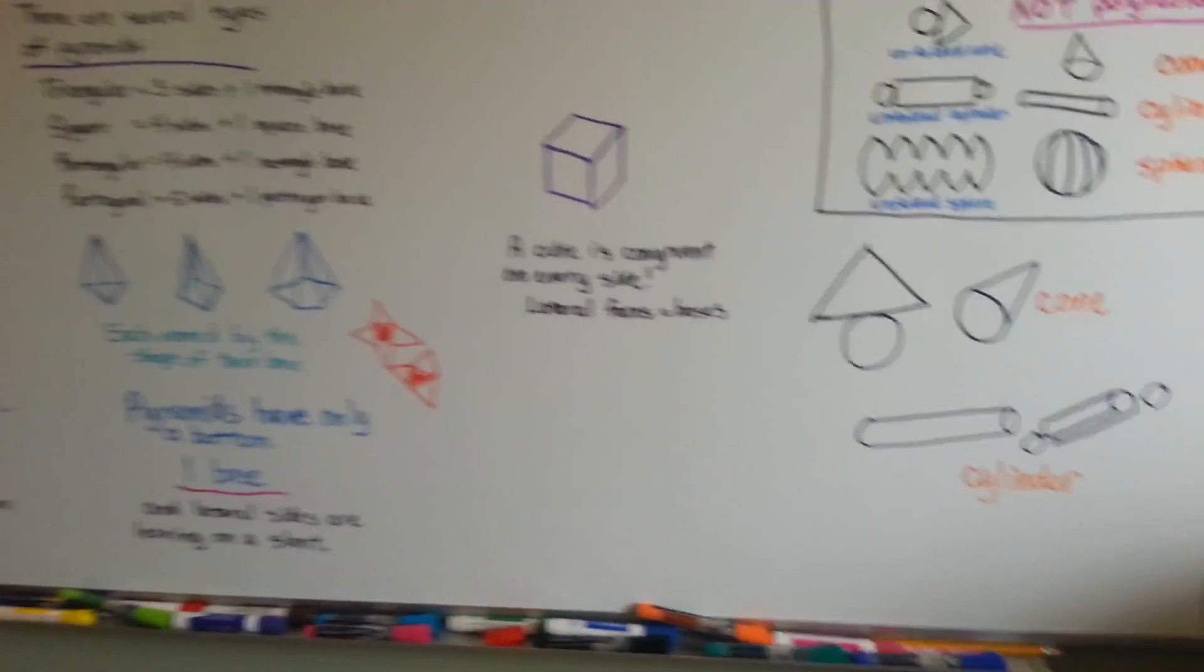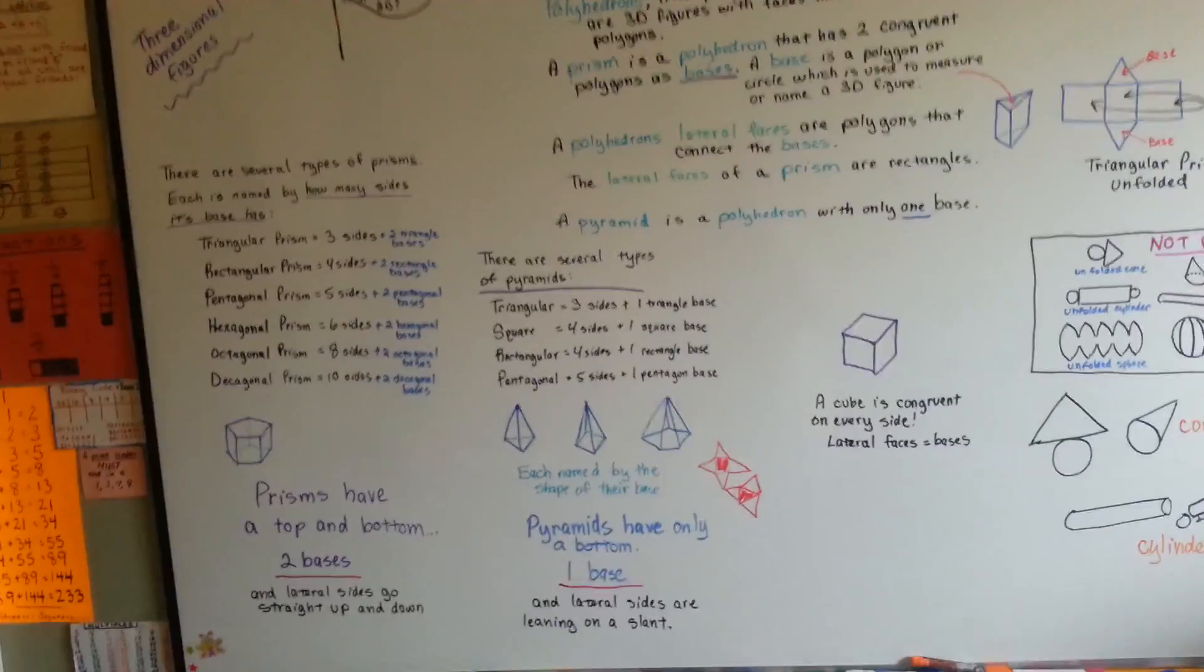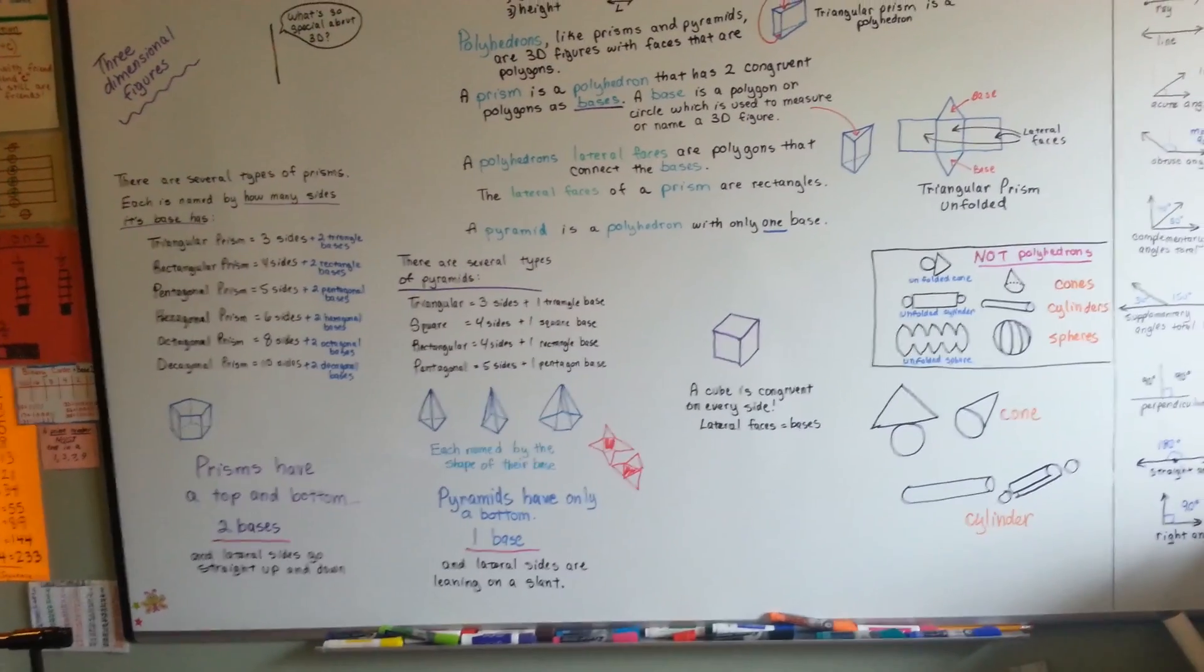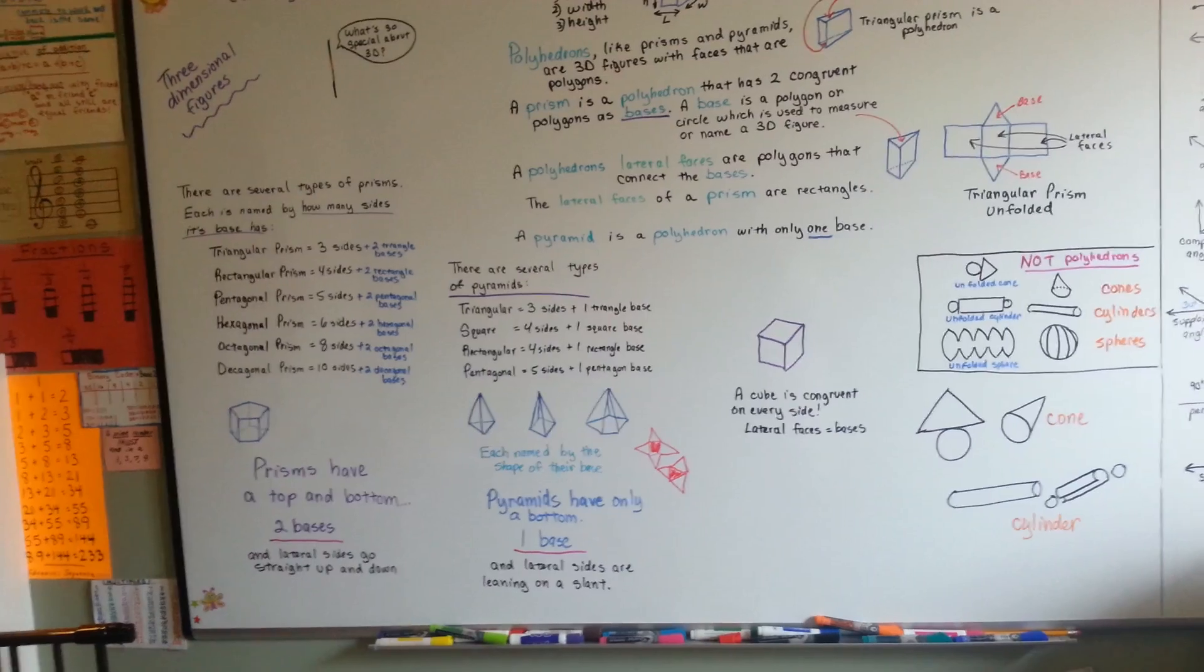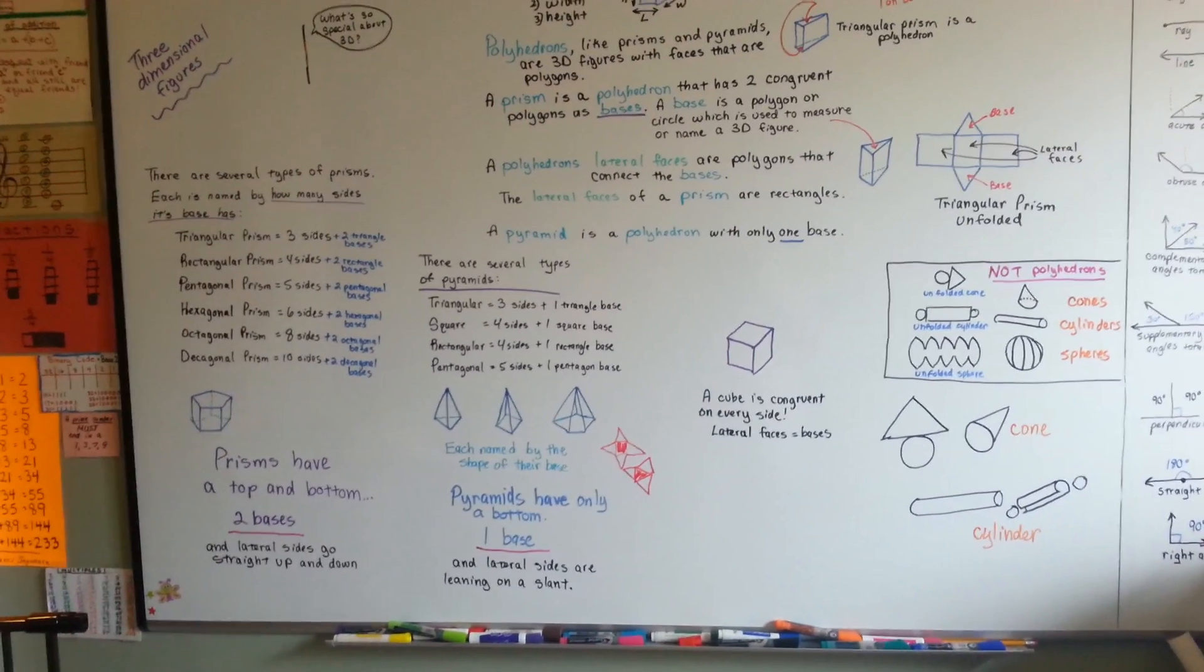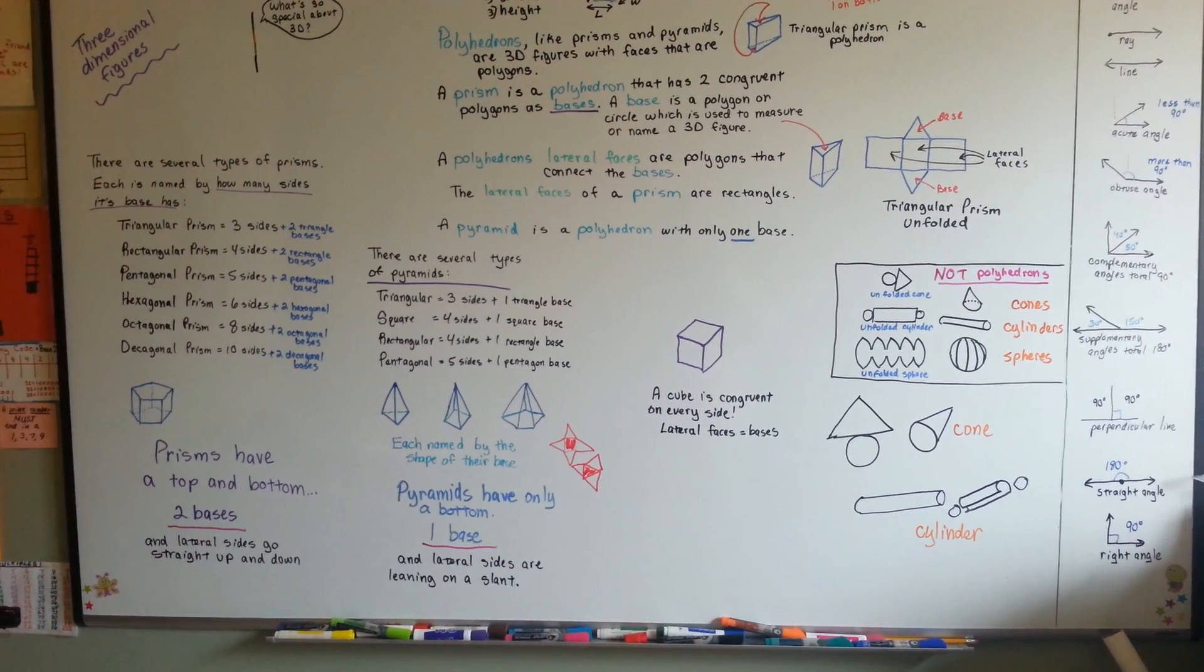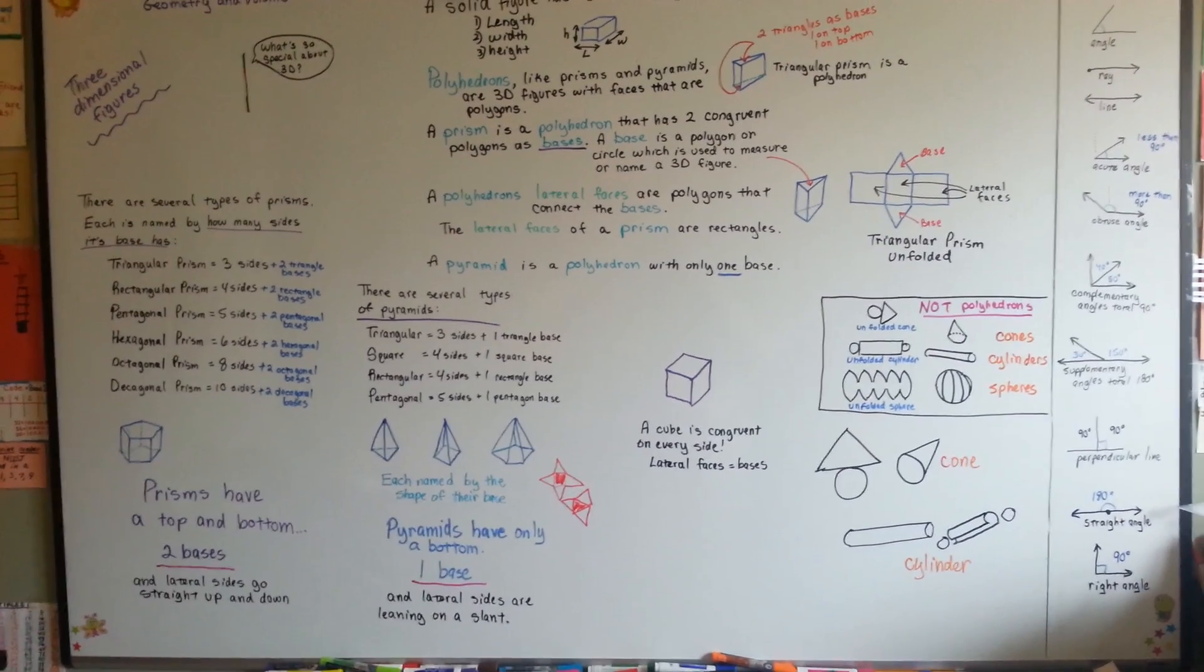So, those are 3D figures. They have length, width, and height. And now you know the differences between prisms and pyramids. Prisms have a top and a bottom, two bases. Pyramids have only one. Prisms have rectangular lateral sides, and pyramids have triangular sides. But they're both named off of the shape of their base.